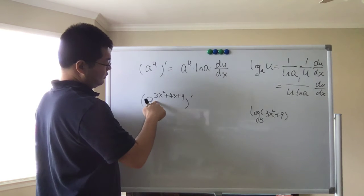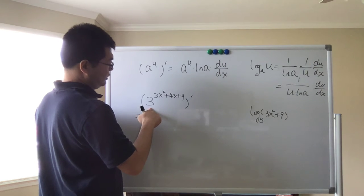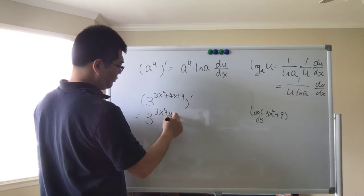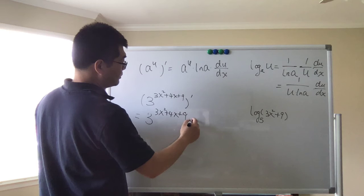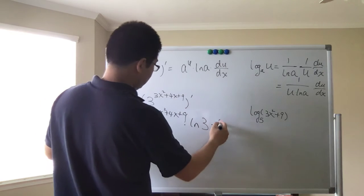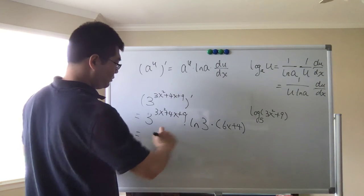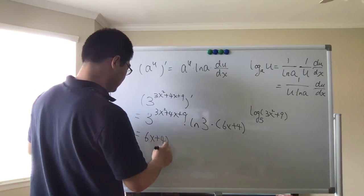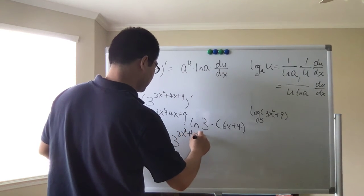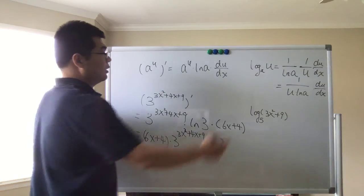For example, to find the derivative of 3 to the power of (3x² + 4x + 9): here a equals 3 and u equals 3x² + 4x + 9. We copy the base term — 3 to the power of (3x² + 4x + 9) — then multiply by ln(3), then multiply by the derivative of the inside function, which is 6x + 4. Rearranged, this is (6x + 4) times 3 to the power of (3x² + 4x + 9) times ln(3).